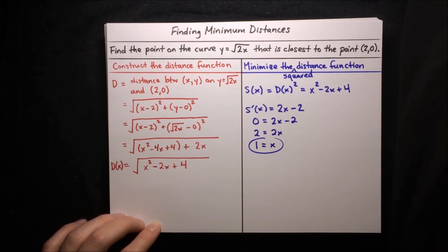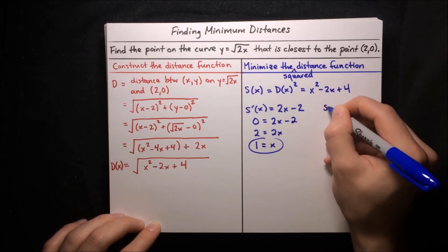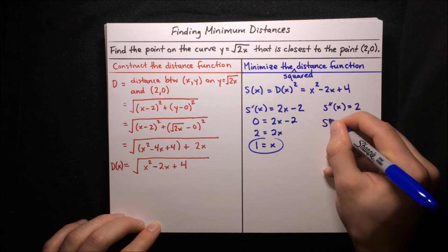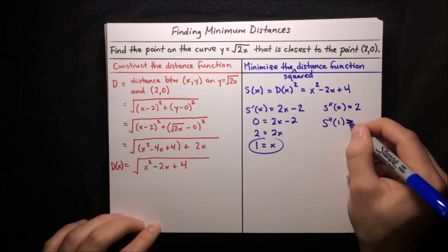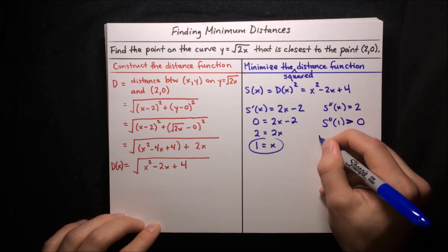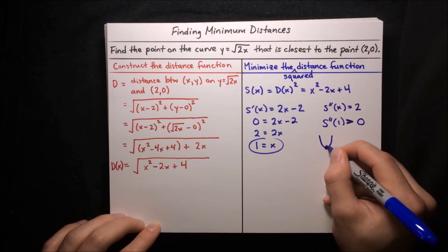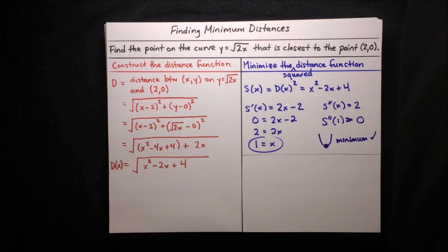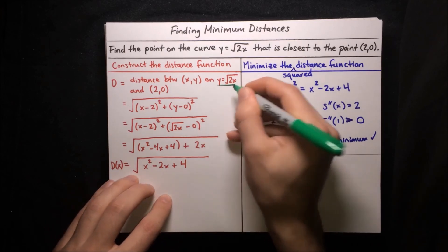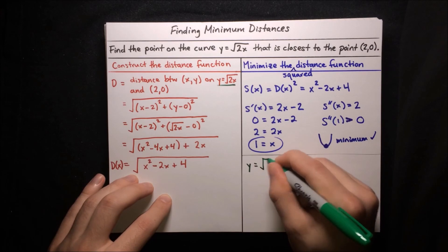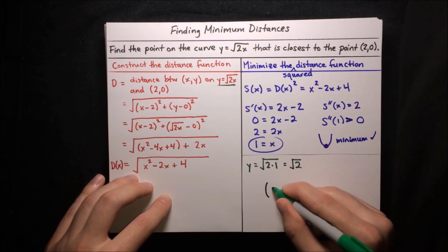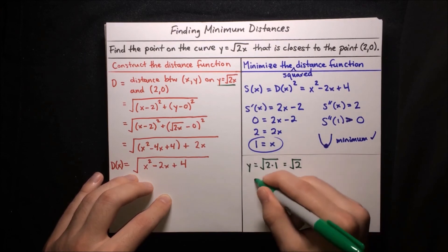To confirm this is a minimum, we check the second derivative: s″(x) equals 2, which is always positive, meaning the function is concave up — confirming a minimum. Now we find the y-coordinate using y equals √(2x): if x equals 1, then y equals √(2 times 1) equals √2. So the point on the curve y equals √(2x) closest to (2, 0) is (1, √2).